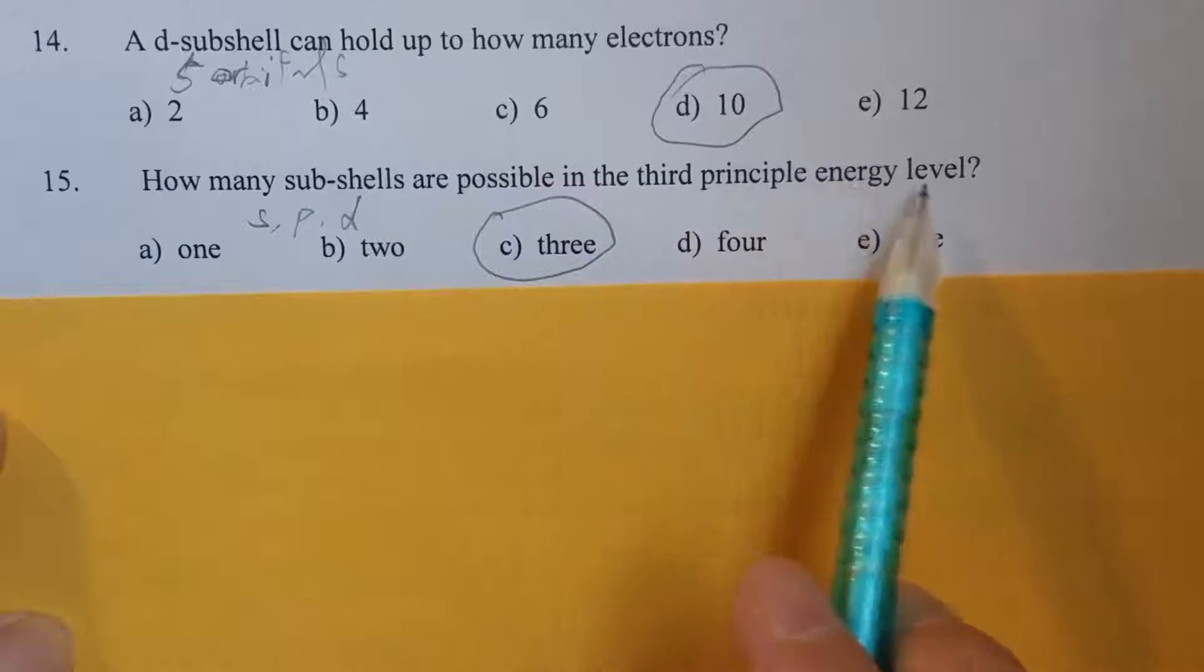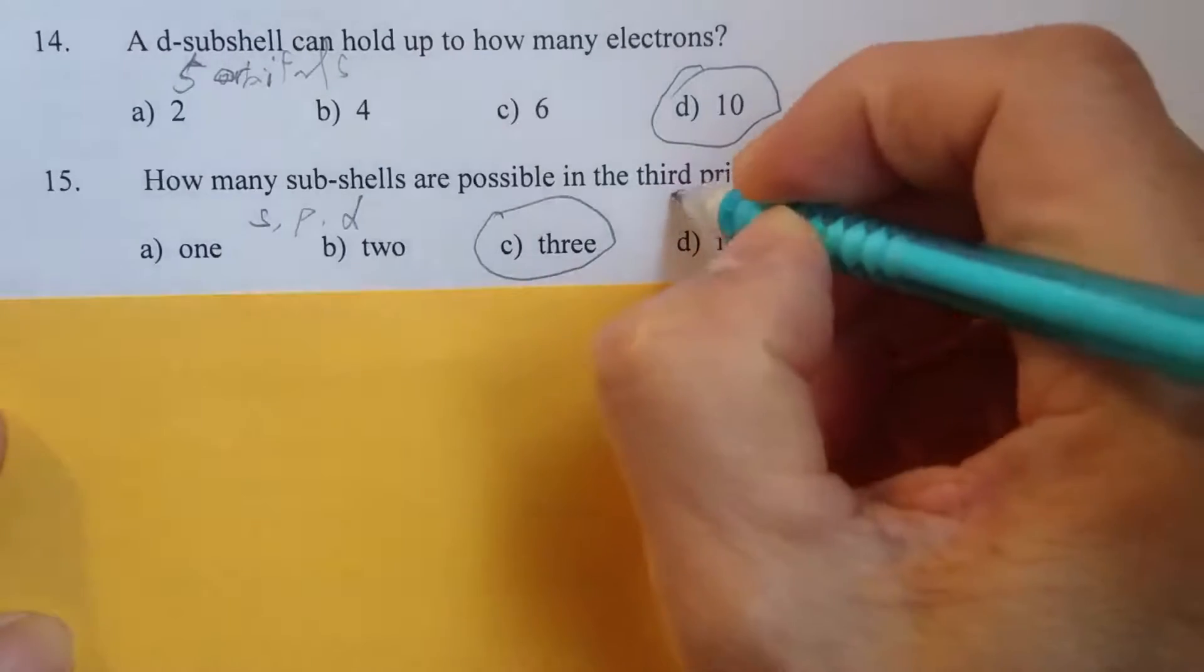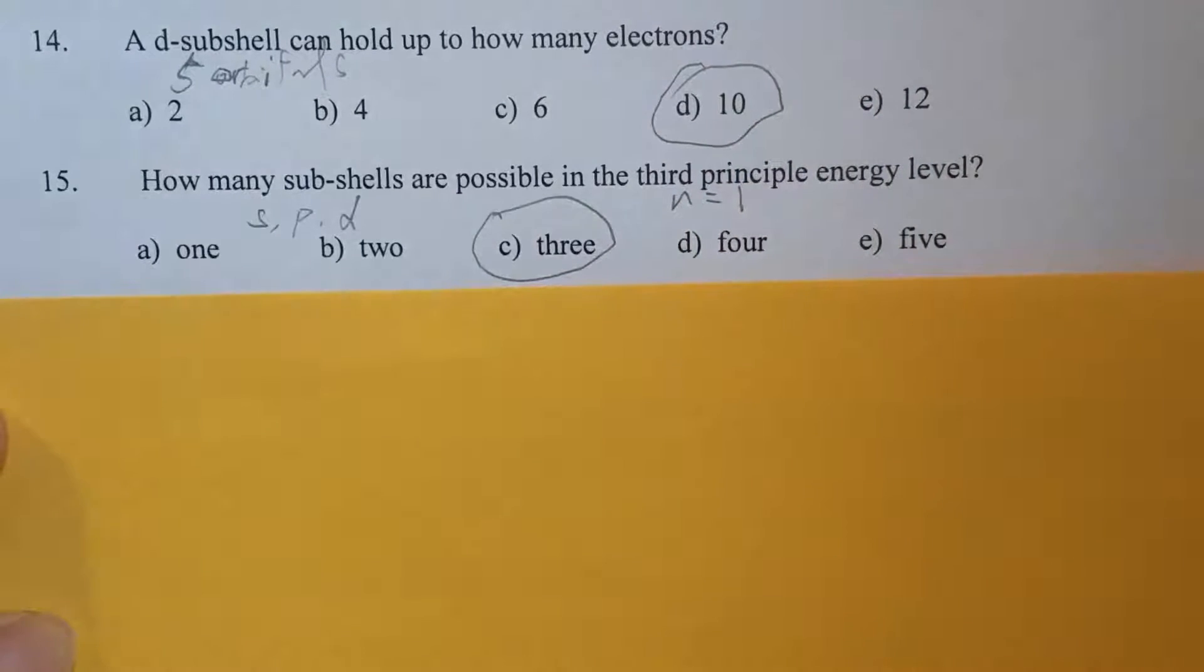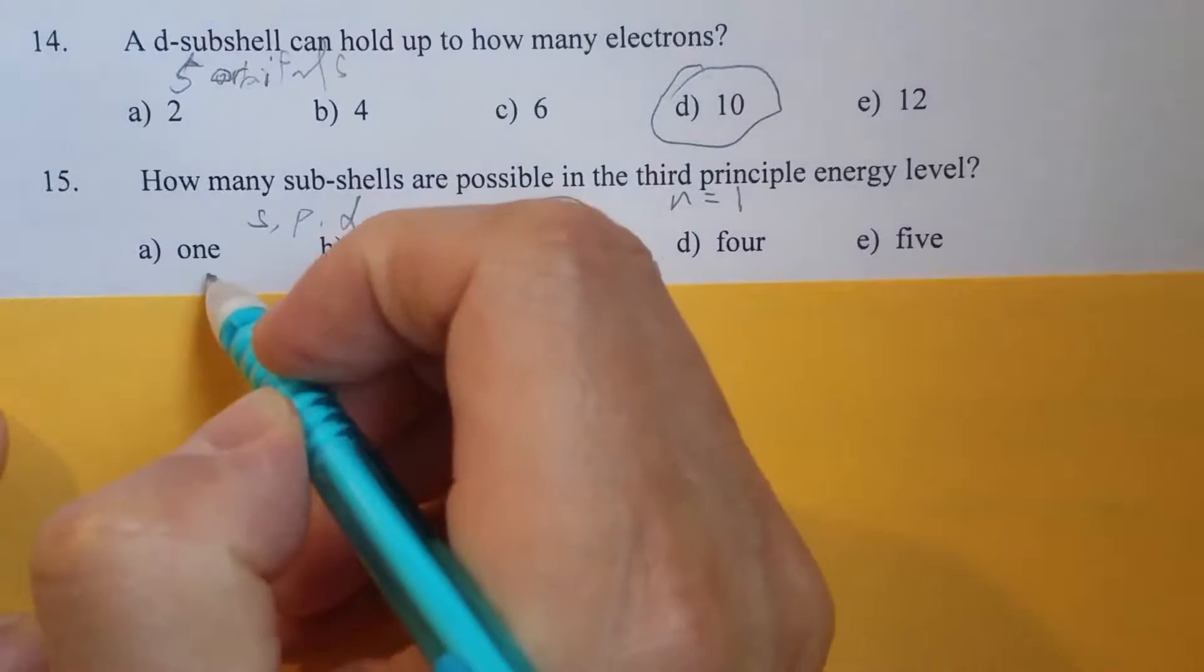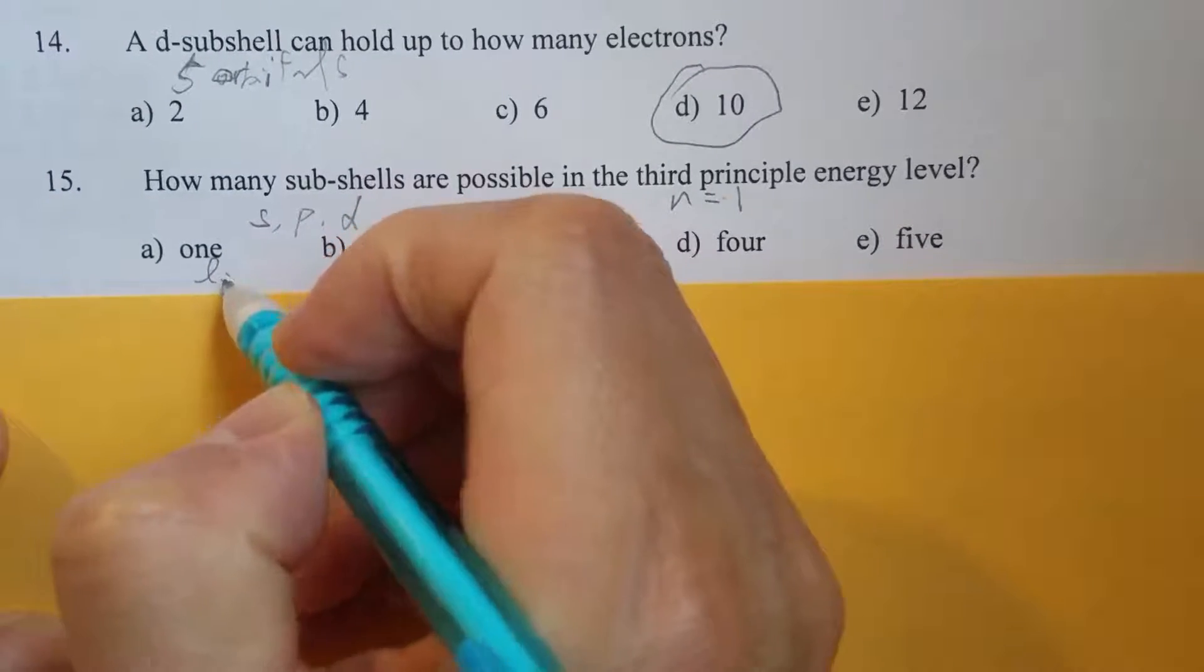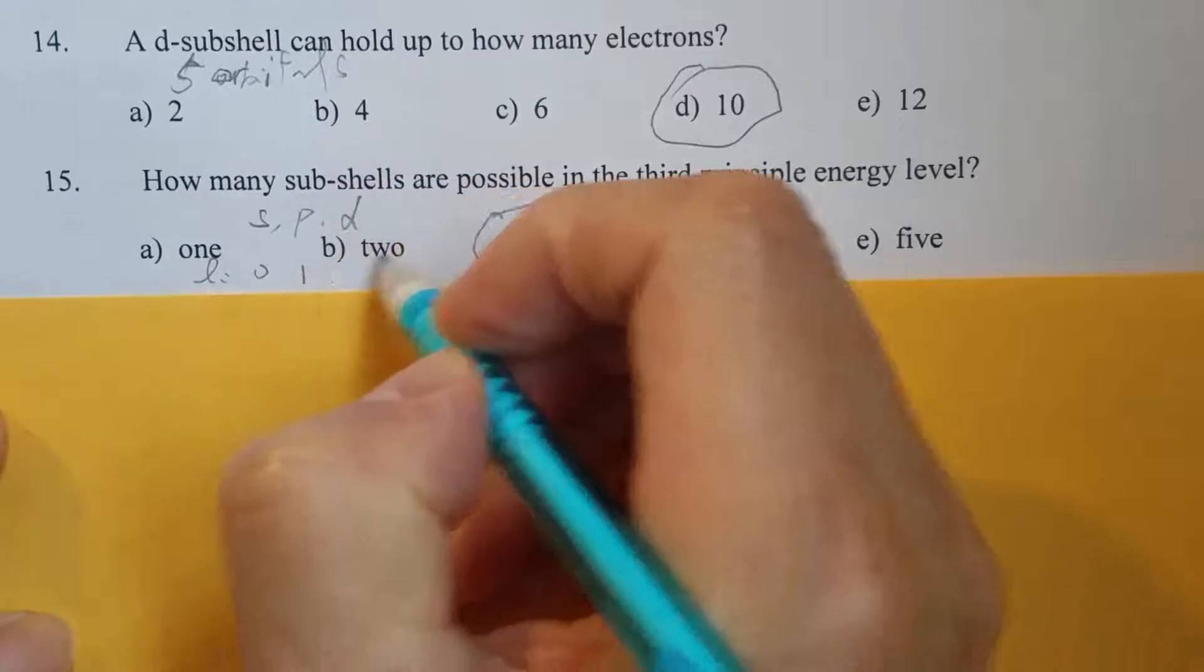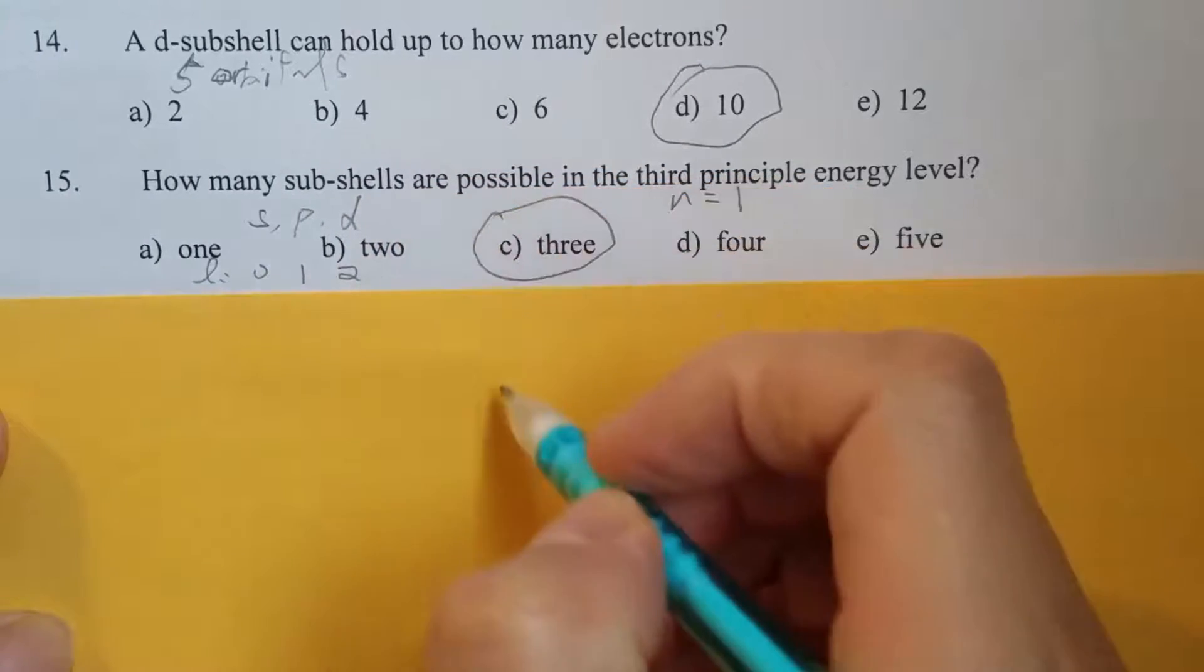Third principal energy level means n equals 3. So if n equals 3, as I just mentioned, the allowed l value can be 0, can be 1, can be 2. That's it.